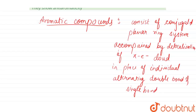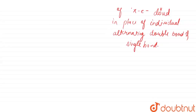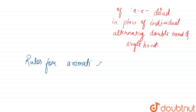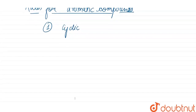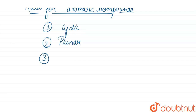Now let us see the key points, or rules, for aromatic compounds. Number one: the compound should be cyclic in nature. Number two: it should be a planar compound. Number three: it should follow the four n plus two pi electron rule.